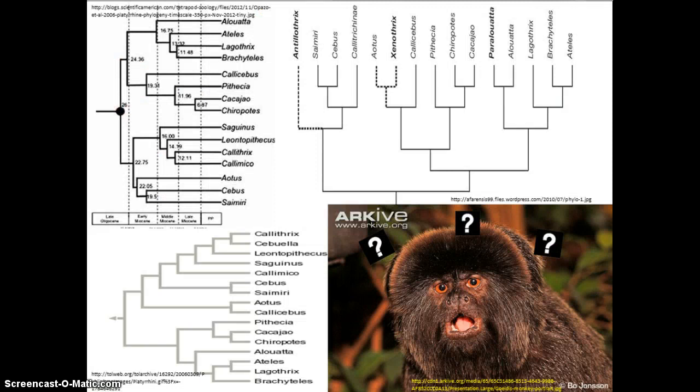Calamico Goldie is somewhat of a mystery in the primate taxonomic world, because primatologists currently argue as to where it belongs — either in the Cebidae family, Callitrichidae family, or its own family, Callimiconidae. They are a monotypic species, meaning they are only a genus with one species, themselves.